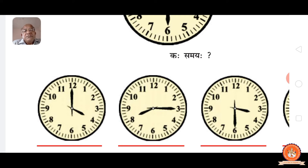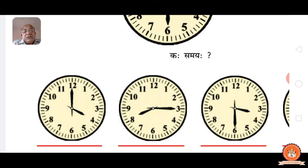See number three: fifteen minutes past eight, or in other words quarter past eight. In Sanskrit it is called shapad asht vadanam. Shapad means fifteen minutes past, and asht means eight o'clock — that is, quarter past eight or fifteen minutes past eight.